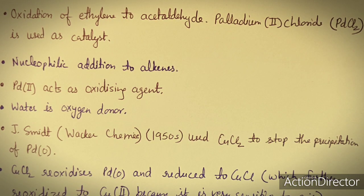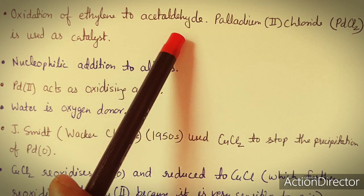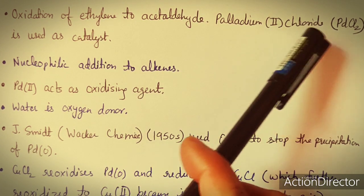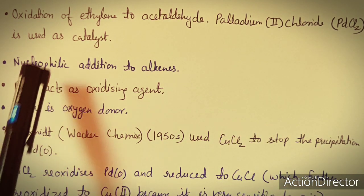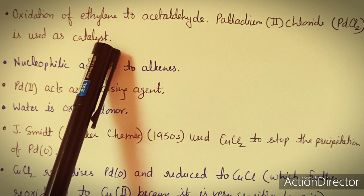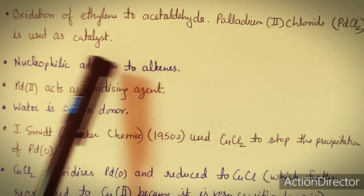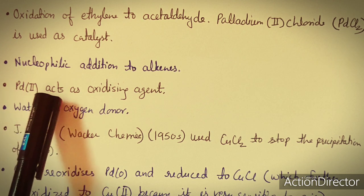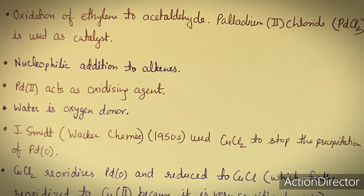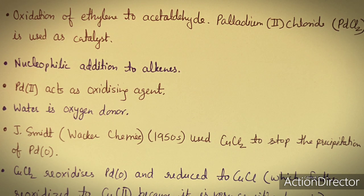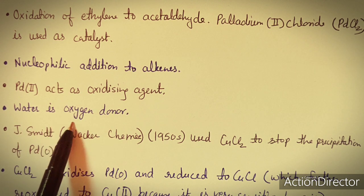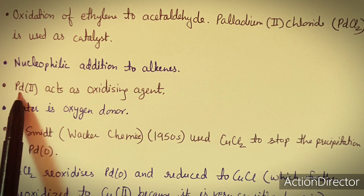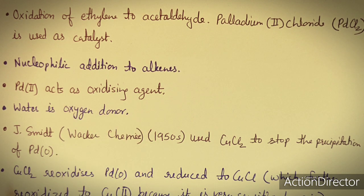In the Wacker process, oxidation of ethylene to aldehyde takes place. The catalyst used in this Wacker process is palladium(II) chloride, PdCl₂. PdCl₂ is used as a homogeneous catalyst. This Wacker process is a kind of nucleophilic addition to alkene. PdII acts as an oxidizing agent and water is an oxygen donor.